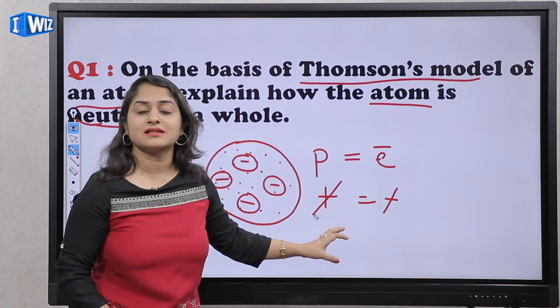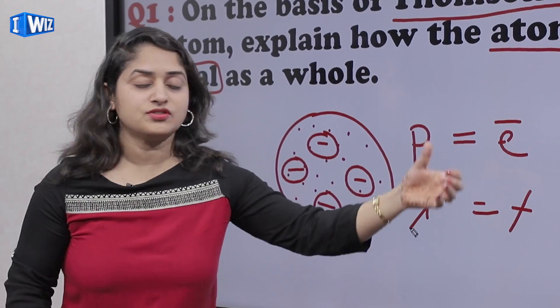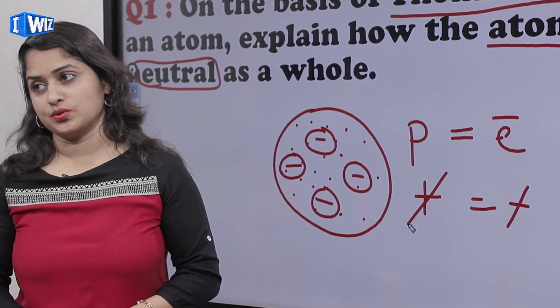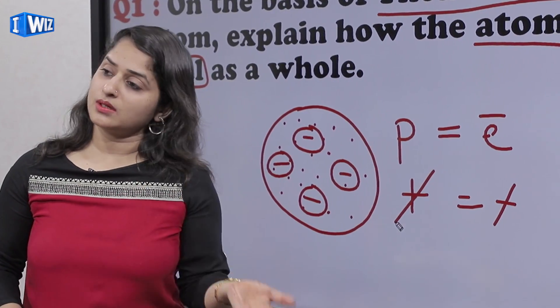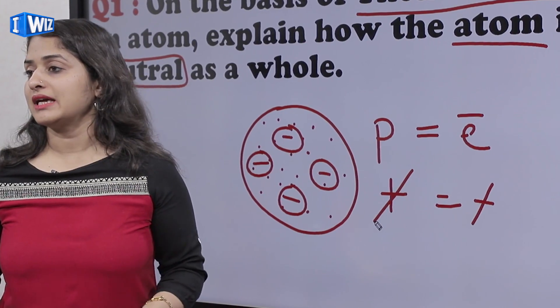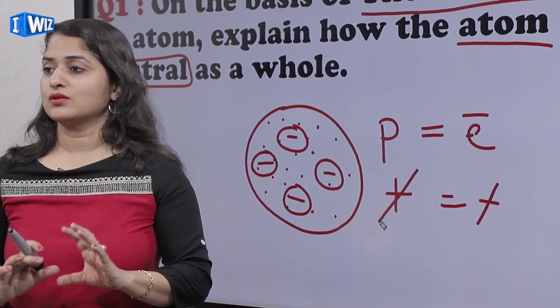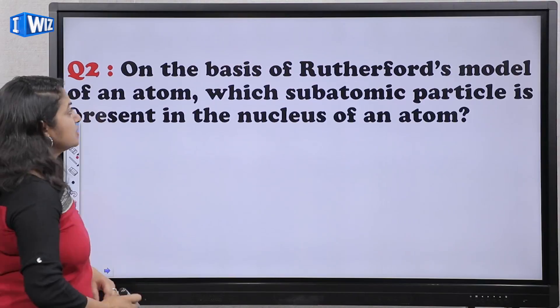So positive charge represents proton, and negative charge represents electron. In any atom, as a whole, neutral is neutral. Our next question is: